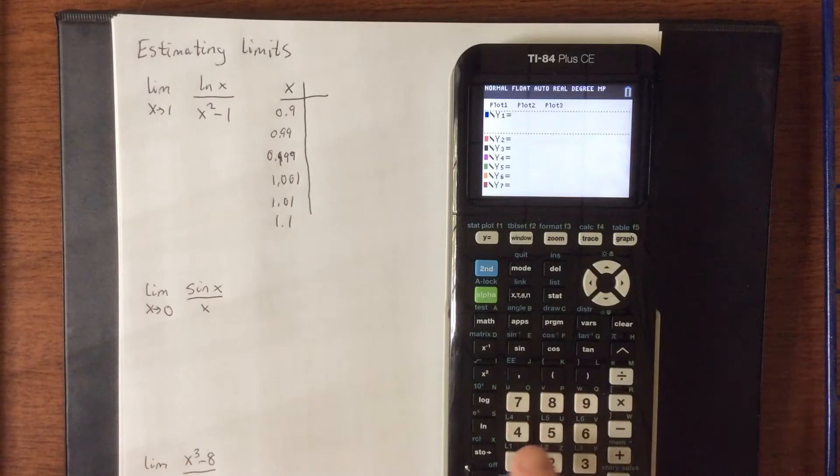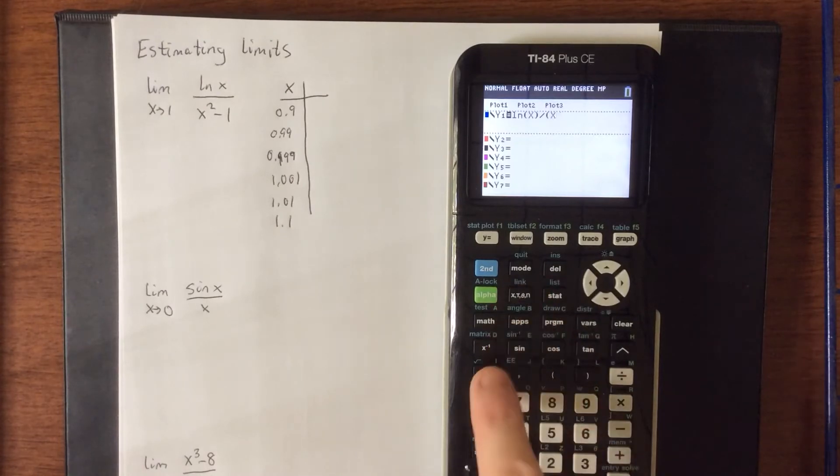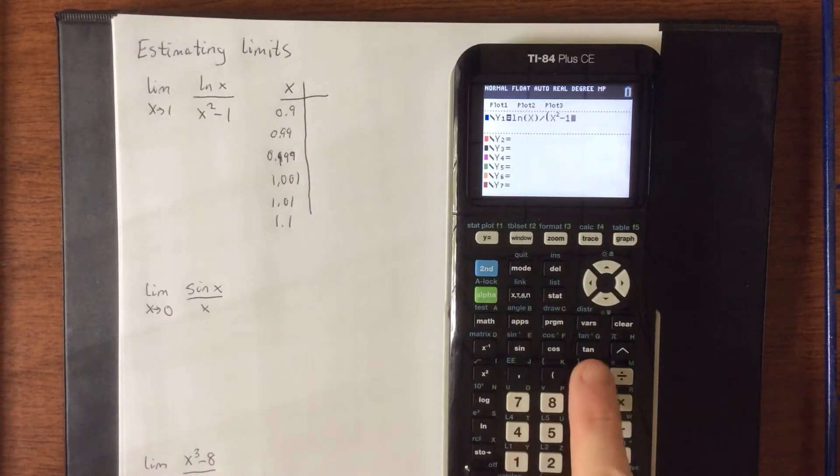So natural log of x, close the parentheses, divided by new set of parentheses since we have multiple terms in the denominator, x squared minus 1.